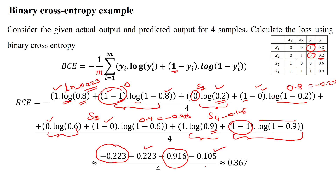You get the sample number 4 value divided by the number of samples m. Finally, the loss function value is 0.367 for the 4 samples using binary cross-entropy for this binary class classification problem. Thanks for watching.